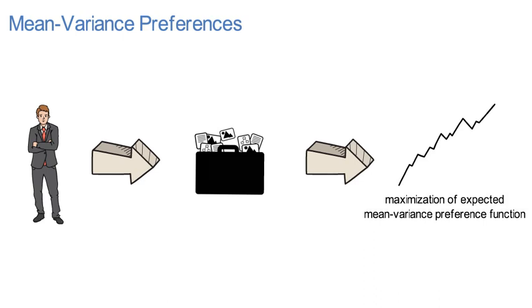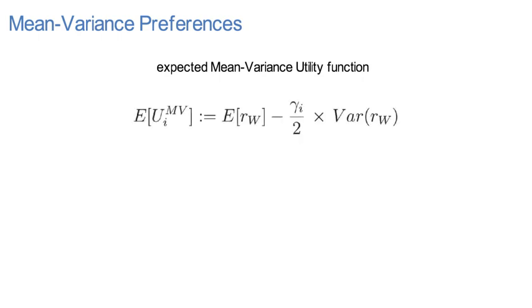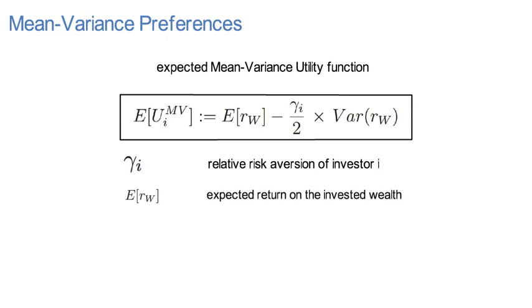As U' is a positive monotone transform of the input and U'' is a measure for the investor's risk aversion, the expected mean-variance utility function can be simplified to the following expression. Where Gamma I is the relative risk aversion of investor I, the expectation of Rw is the expected return on the invested wealth, and the variance of Rw is the respective return variance.